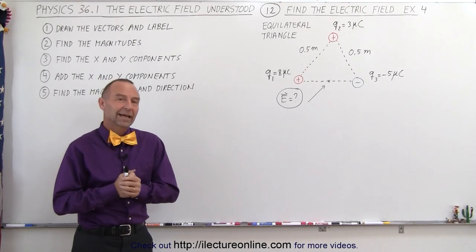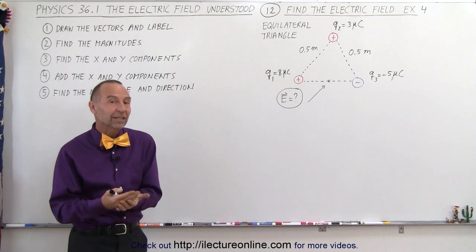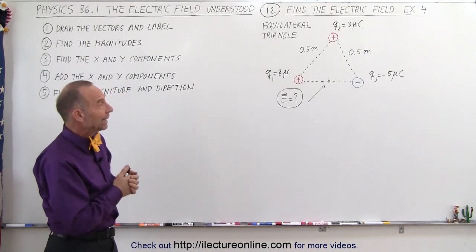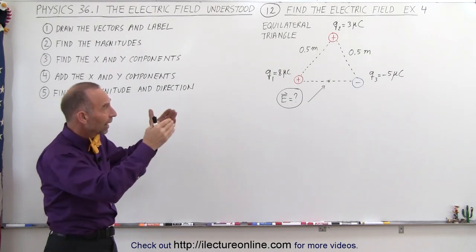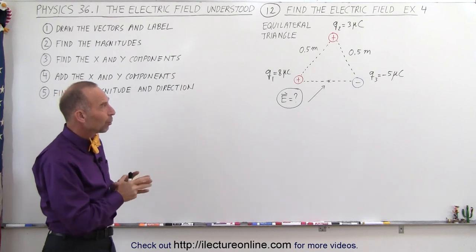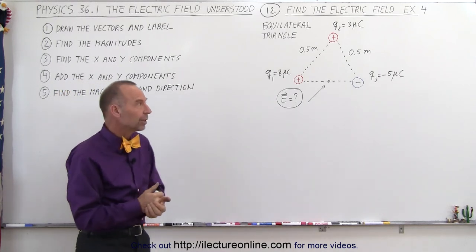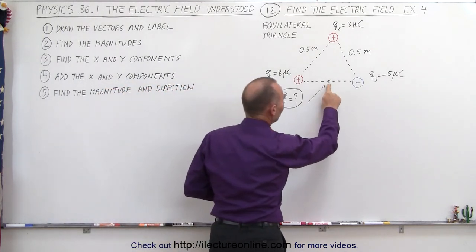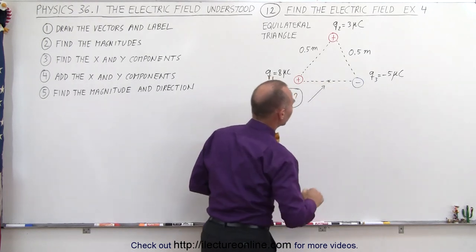Welcome to ElectronLine. We're slowly increasing the difficulty level of finding the electric field due to the presence of some charges. In this case we have two positive and a negative charge at the corners of an equilateral triangle. Each side is 0.5 meters in length and therefore the interior angles are all 60 degrees. We're trying to find the electric field at the halfway point between the positive and negative charge on the base of the triangle.